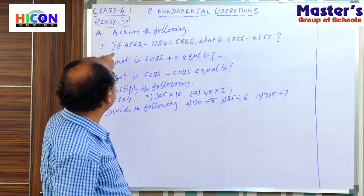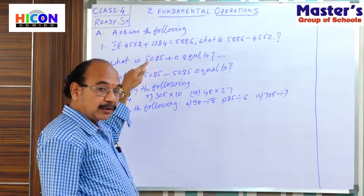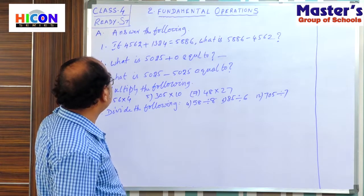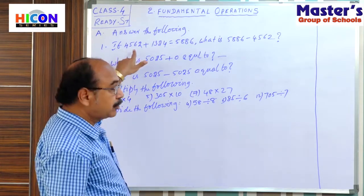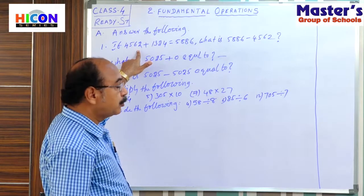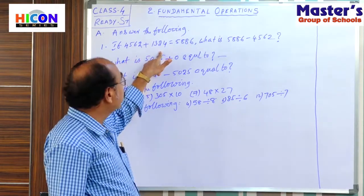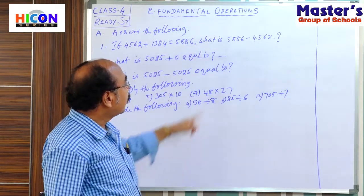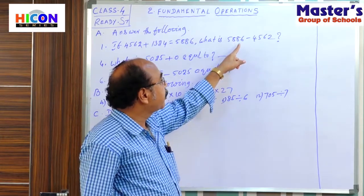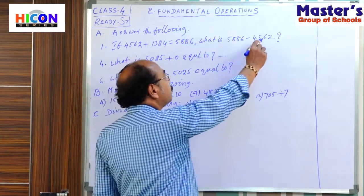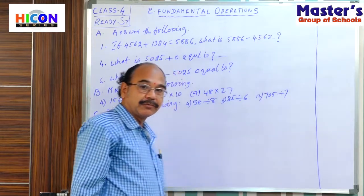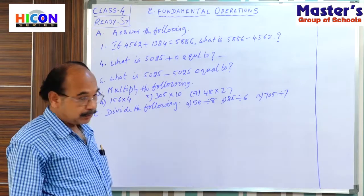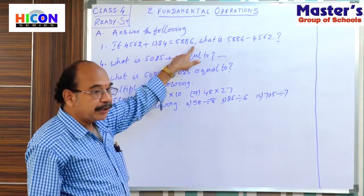What do we have to answer here? The first question: if 4,562 plus 1,324 is equal to 5,886, what is 5,886 minus 4,562? That is the first question. Observe the two numbers — the sum of the two numbers is 5,886.